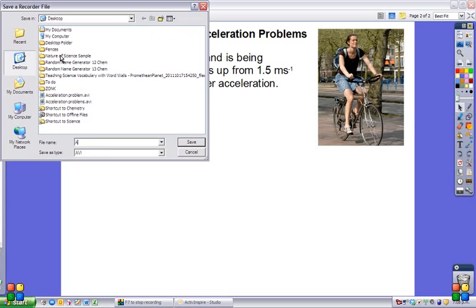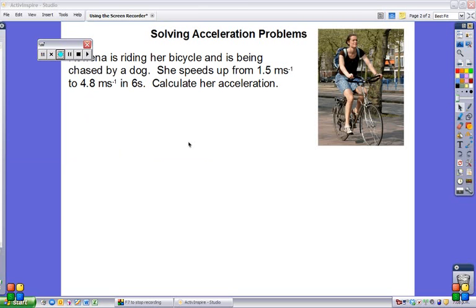So click on that and it'll ask me to save, select what I'm going to save it as, and it saves as an AVI. I'm just saving it to my desktop but you can save it anywhere you like.